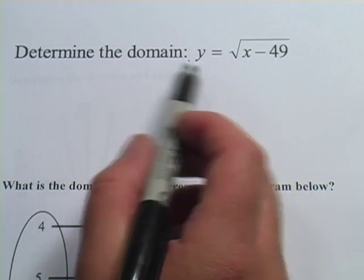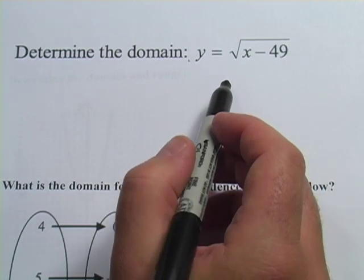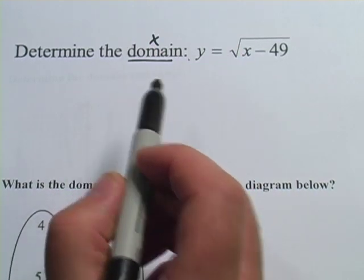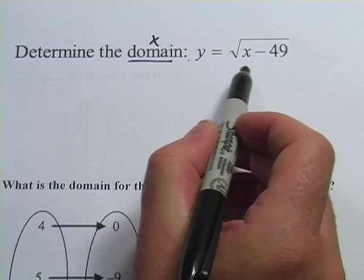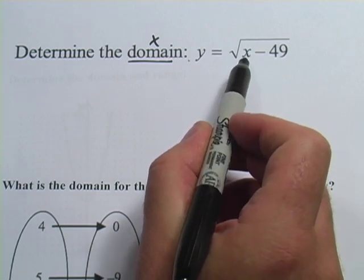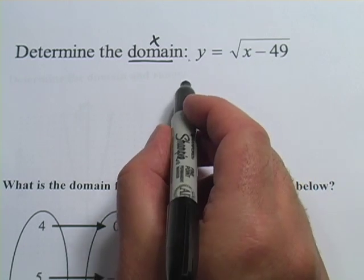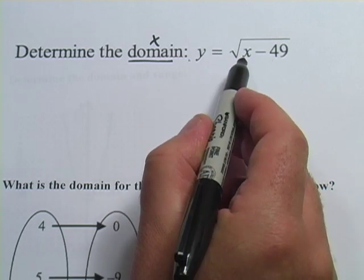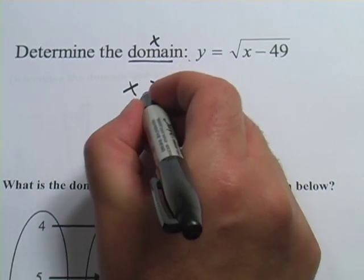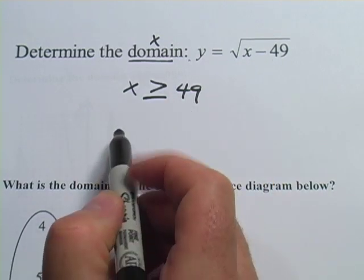Here's another one: determine the domain of a function with a square root symbol. The square root should alert you that you can't put everything in for x. To find the domain, ask: what value of x makes what's under the radical equal to 0? If I put 49 in for x, then x minus 49 equals 0, so 49 works. Anything less than 49 gives a negative under the radical, which doesn't work. So x must be greater than or equal to 49 — that's the domain.